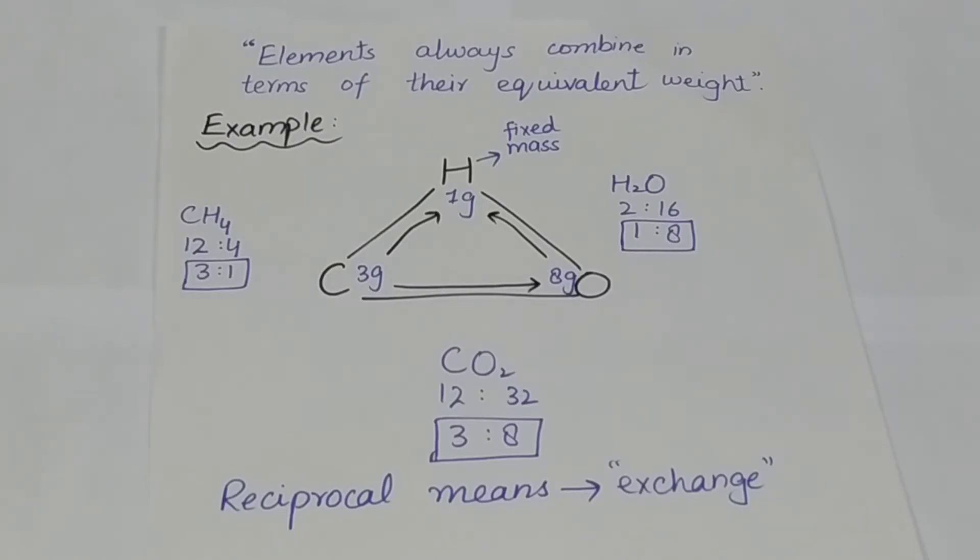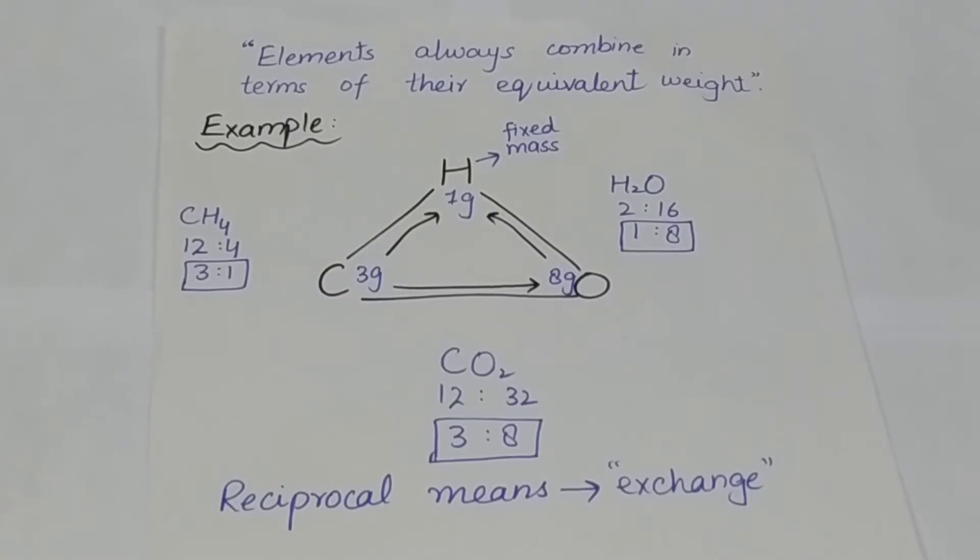4 into 4 is 1, and 4 into 12 is 3. It means methane is produced when 3 grams of carbon is combined with 1 gram of hydrogen.